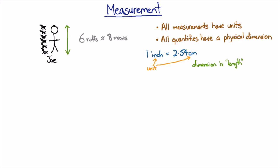And this equation is alright because it has a length equal to a length. You can't have a length equal to a time. That just doesn't make any sense.